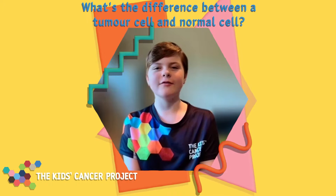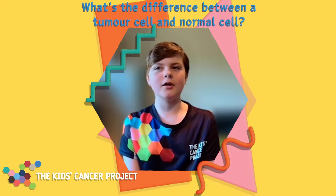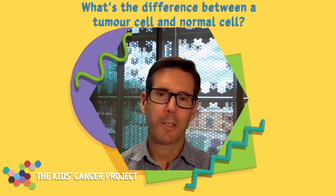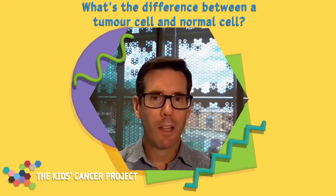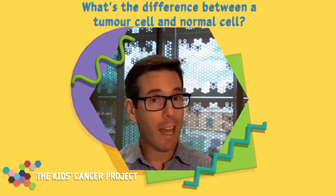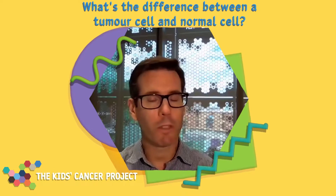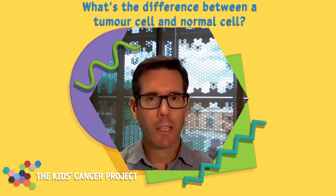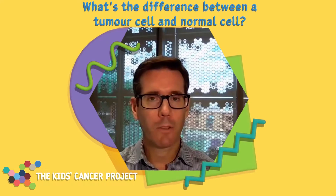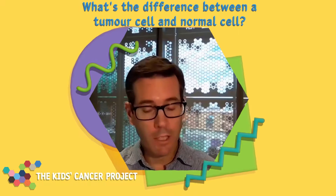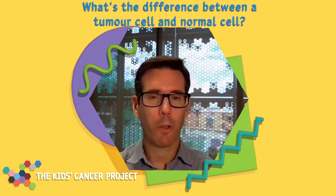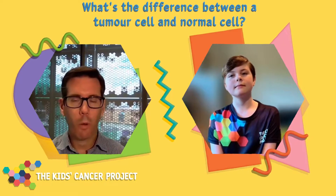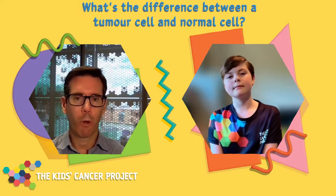What's the difference between a tumour cell and a normal cell? Great question. So tumour cells started out as a normal cell, but they had some changes take place — or mutations, as we call them — that altered the way the cell works.